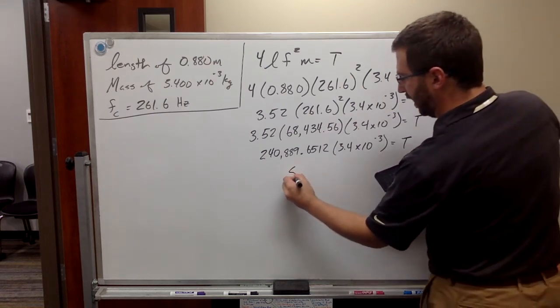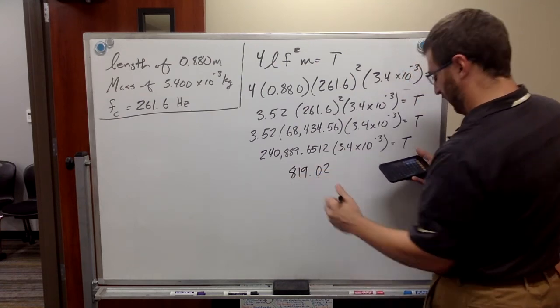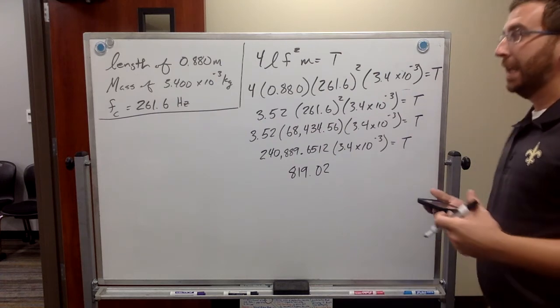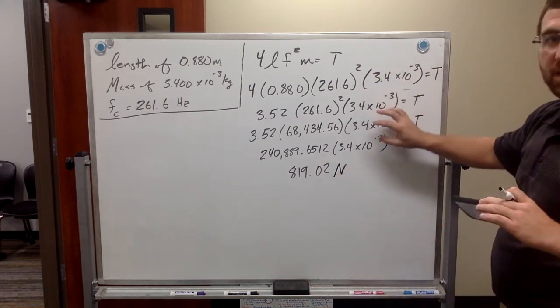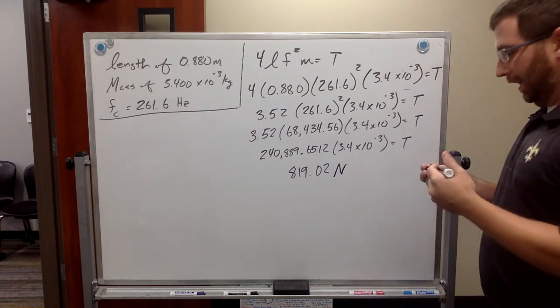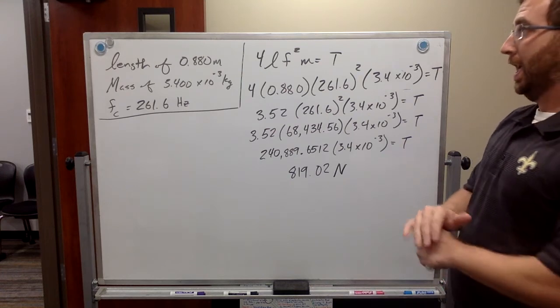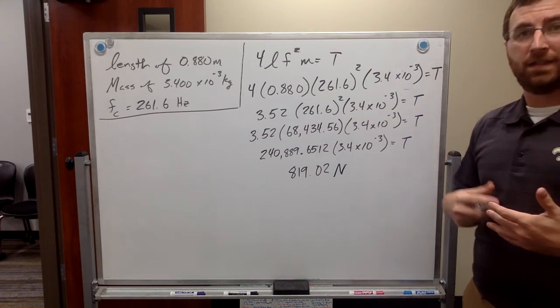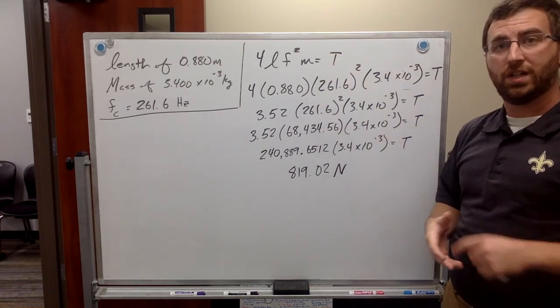All I did was just bring down this number here. So, I'm going to take 3.4 times 10th of the minus 3 and multiply it by my 240,000 number. And then, I get a final answer of 819.0248, yada, yada, yada. Always a safe assumption. Round to the nearest two decimal places. Now, since we're finding tension, tension is always measured in newtons. I didn't worry about the measurements up at the top here because most people make a mistake in the mathematics. So, you know, like I said, the equations in the book, sometimes they're very helpful. Sometimes they're not.